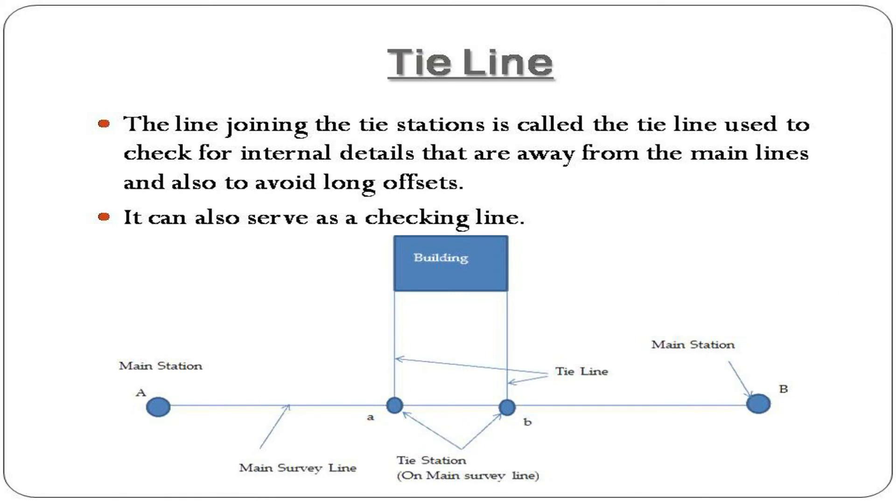Tie line: The line joining the tie stations is called the tie line. It is used to check for internal details that are away from the main lines and also to avoid long offsets. It can also serve as a check line.